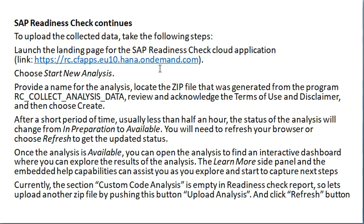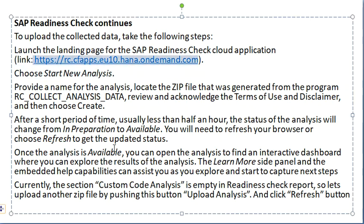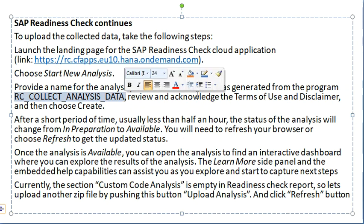This page shows how to execute the SAP Readiness Check. Launch the landing page of the SAP Readiness Check cloud application — this is the URL where we conduct the readiness check. Choose Start New Analysis. Provide a name for the analysis and select the zip file location. It generates a zip file when we run the RCCollectData analysis, and that file we need to upload here.